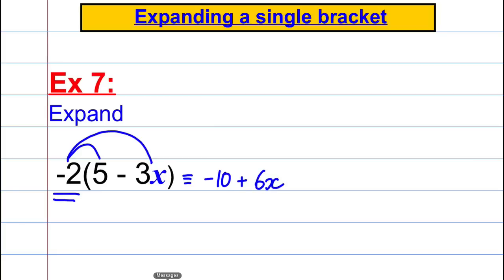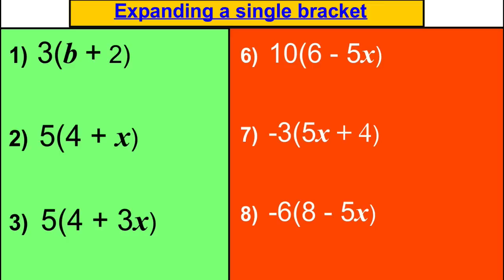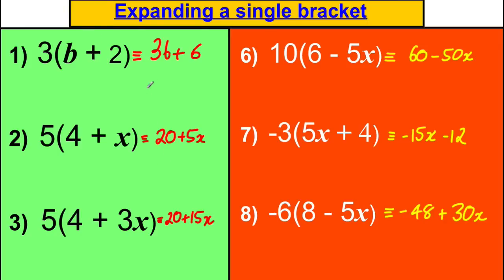Those are all the examples of expanding a single bracket. Now it's time for you to try some yourself — pause the video, have a go, and I'll show you the answers in 10 seconds. The answers are: 3b + 6; 20 + 5x; 20 + 15x; 60 − 50x; −15x − 12; and −48 + 13x. That's all for this video — tune in for the next one where we expand two single brackets and collect like terms. Thanks for watching.